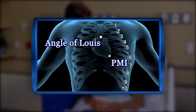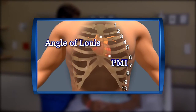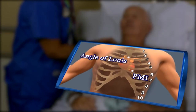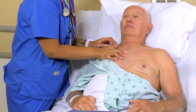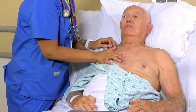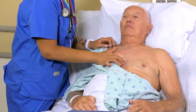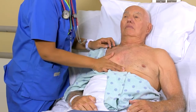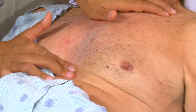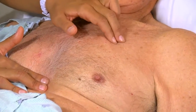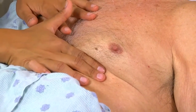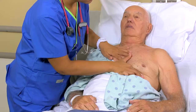Now, locate the point of maximal impulse, or PMI, also known as the apical impulse. First, find the angle of Lewis, a bony prominence just below the suprasternal notch. Slide your fingers down each side of the angle to find the second intercostal space, or ICS. Then carefully move your fingers down the left side of the sternum to the fifth intercostal space and over to the left midclavicular line. When you've found the right spot, you'll feel the PMI as a light tap, about one to two centimeters in diameter, marking the apex of the heart.